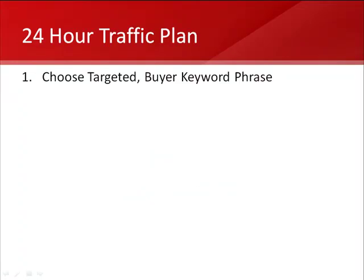Inside the 24-hour traffic plan, the very first step is to choose a targeted buyer keyword phrase. I use the Google AdWords Keyword Tool — I'll show you that in the next video — where we step-by-step help you identify a keyword phrase inside your niche that people are looking for. For example, if you own a small business and you're a chiropractor in Tulsa, Oklahoma, your targeted keyword phrase would be 'Tulsa Oklahoma chiropractors' or 'Tulsa chiropractors,' because that's what people are most likely to search to find your business.